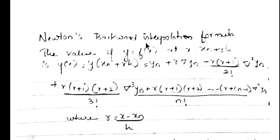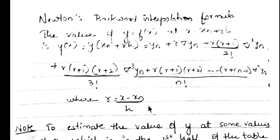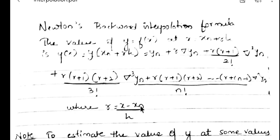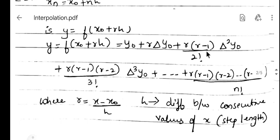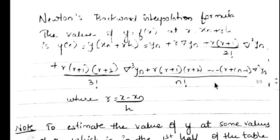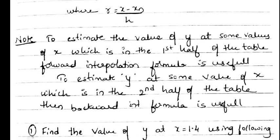The Newton backward interpolation formula has a slight change. y = f(xₙ + rh) = yₙ + r·Δyₙ + r(r+1)/2! · Δ²yₙ + ... up to the nth term. Here r is calculated by (x − xₙ)/h. Notice that x₀ is replaced by xₙ and y₀ is replaced by yₙ. In the forward formula we use minus signs in the binomial terms; in the backward formula we use plus signs — that is the key difference.